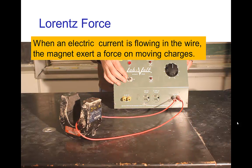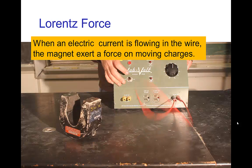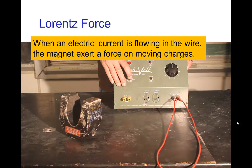See that again? So that Lorentz force acted on the electrons moving in the wire, and the magnetic field produced that Lorentz force on those moving charges, and actually pushed the wire away.